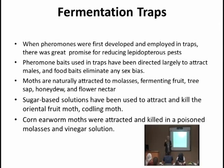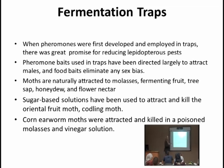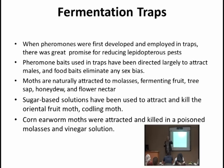في الوضع الطبيعي الفراشات تنجذب لرائحة الفاكهة الناضجة، والملاسس (الدبس)، والفواكه الخامجة، وعسل الزهور. وجدوا أن وجود محلول سكري في مصائد مع سم معين أدى إلى انجذاب حشرات مثل oriental fruit moth (عثة الفاكهة الشرقية) وcodling moth (عثة ثمار التفاح) لهذه المصائد وقتلها، لأن سلوكها أصلاً ينجذب للروائح السكرية.